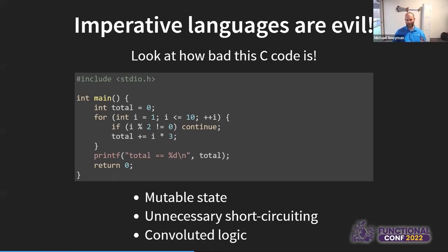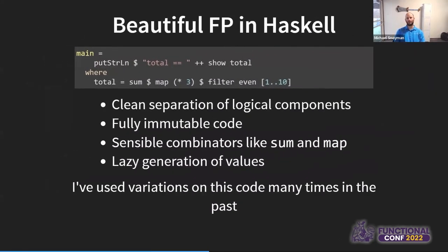Not terribly complex — and it's obviously a contrived example that I've used in many past talks to demonstrate FP principles. Let's compare this convoluted C code to beautiful FP in Haskell.